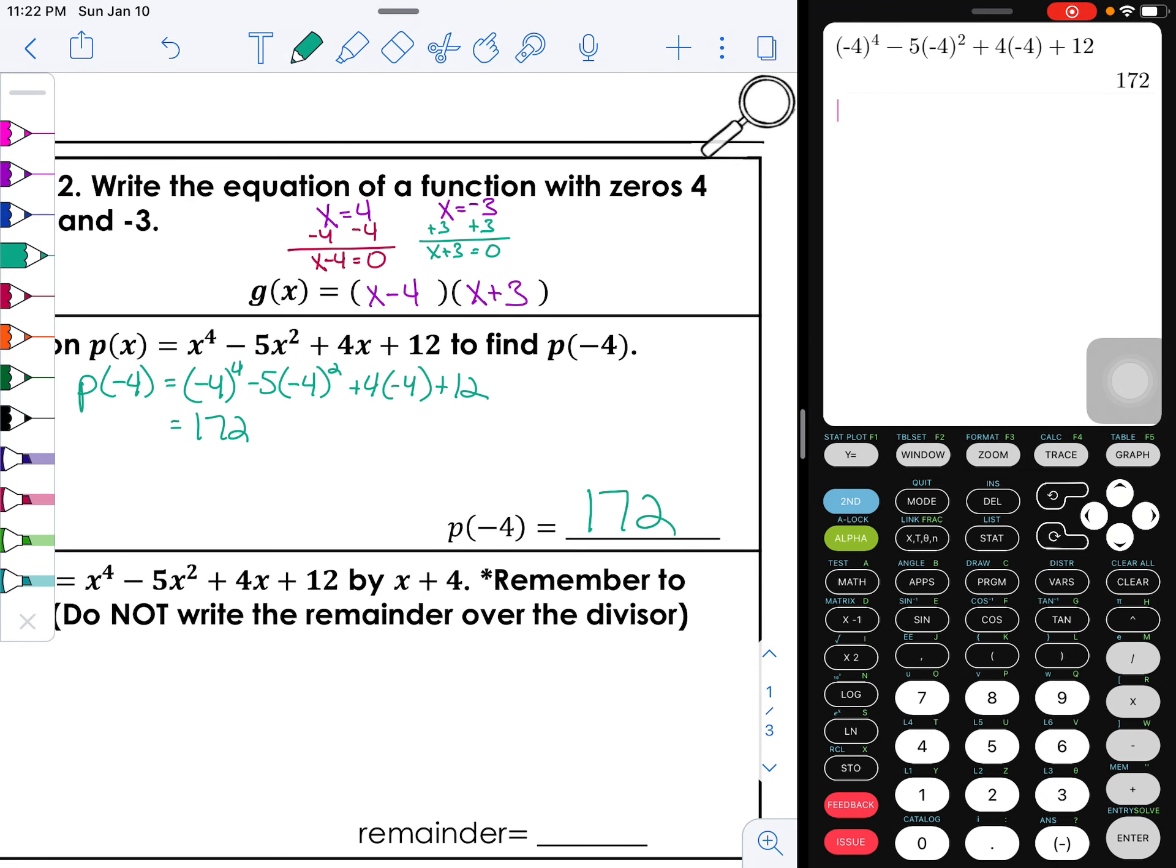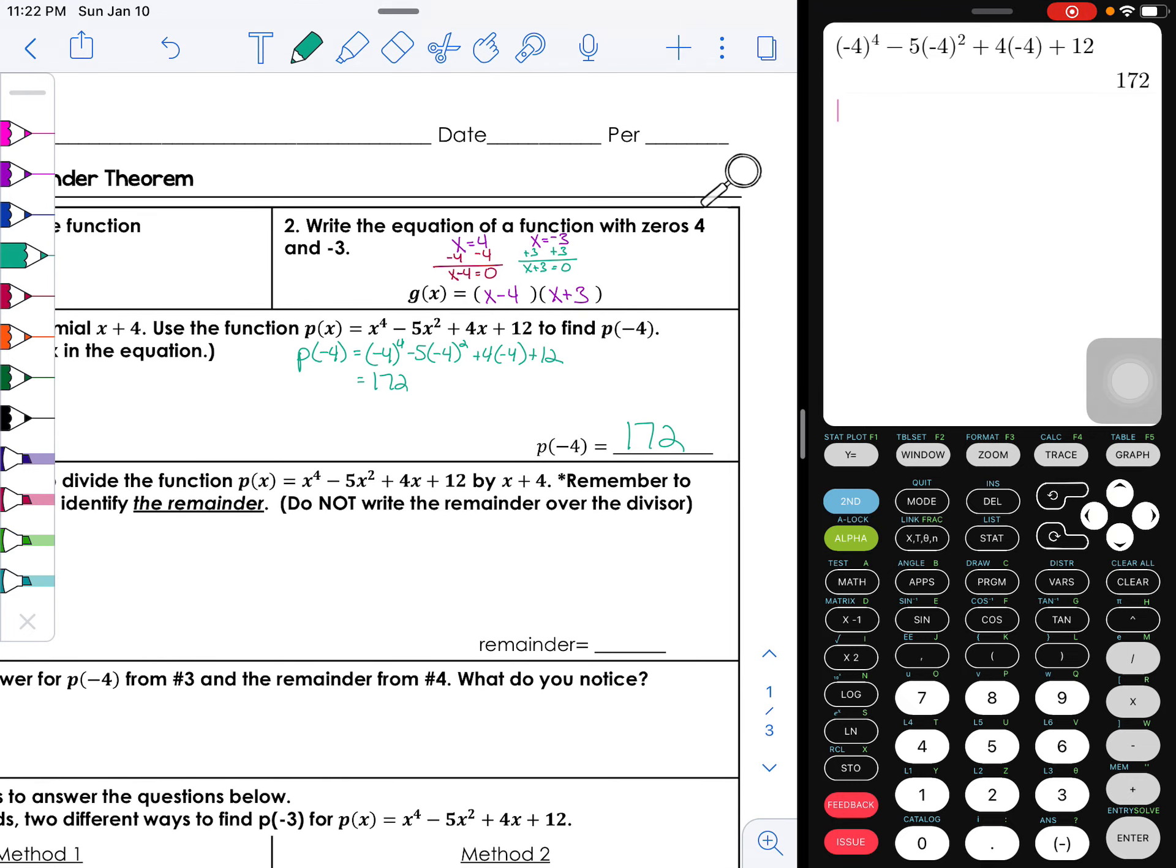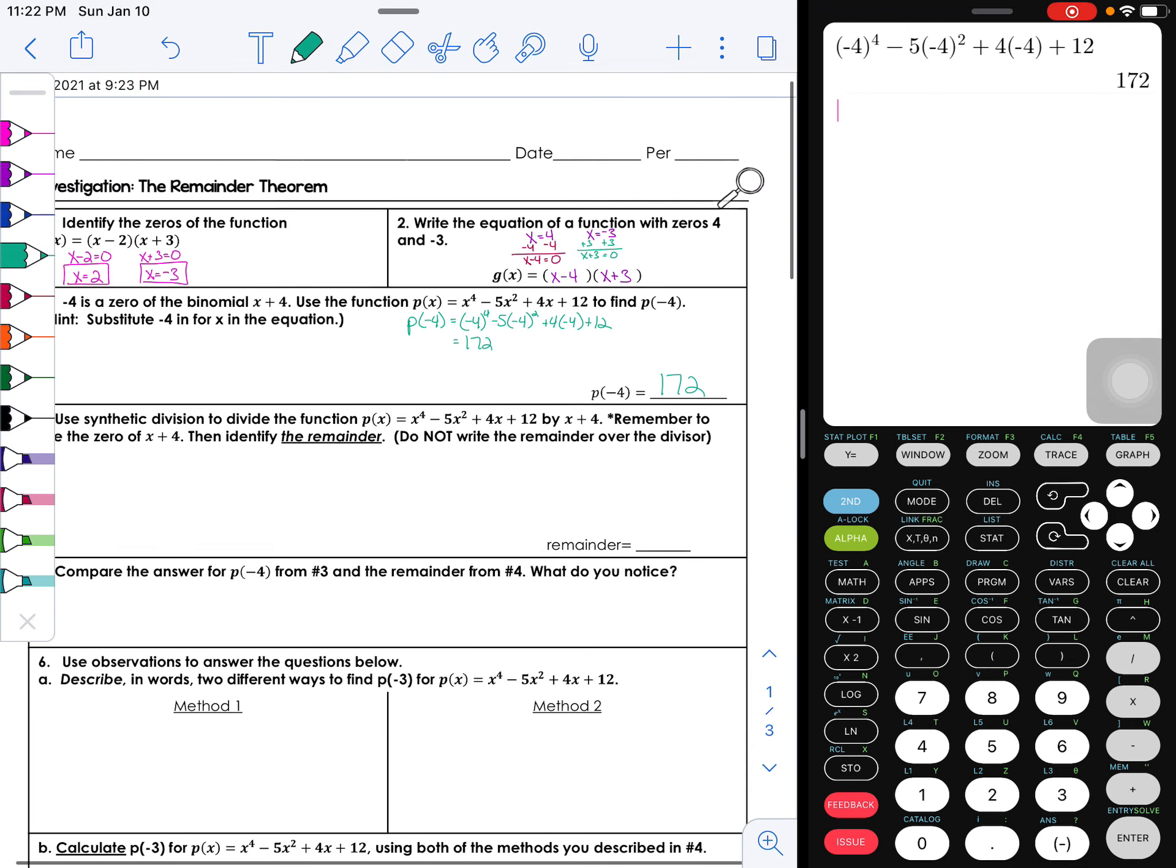All right, so I am getting this answer to be 172. Nice answer, right? So p of negative four, I'm getting 172.